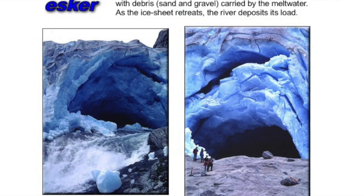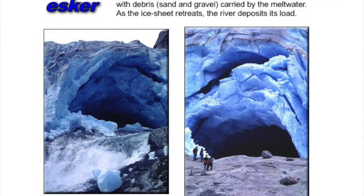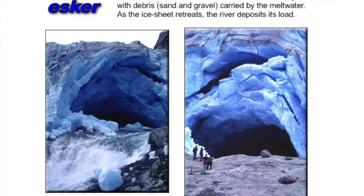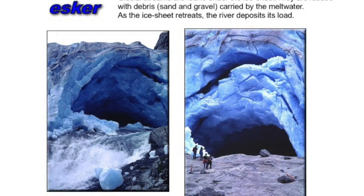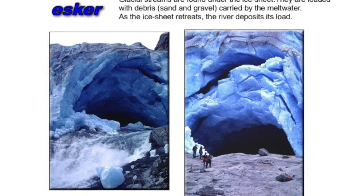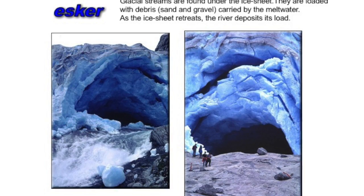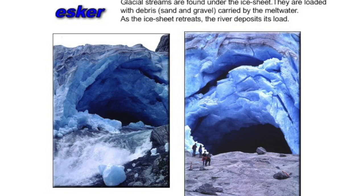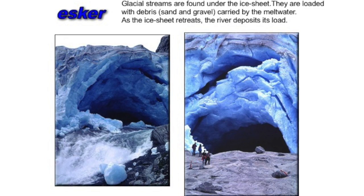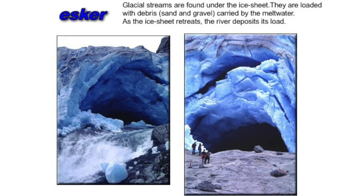The second feature we're going to look at is an esker. Eskers are formed as a result of running water, usually under the glacier. They are long linear mounds of sand and gravel that snake their way across the landscape, similar to the path of the river that was previously carrying the material.